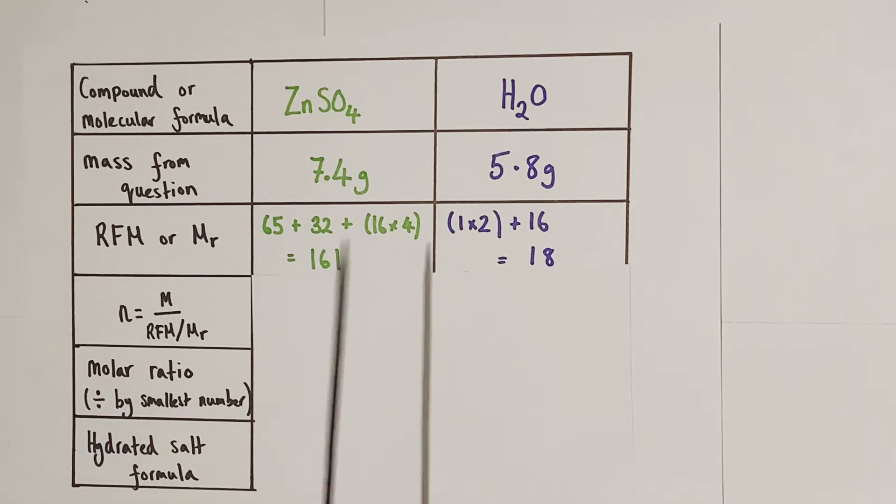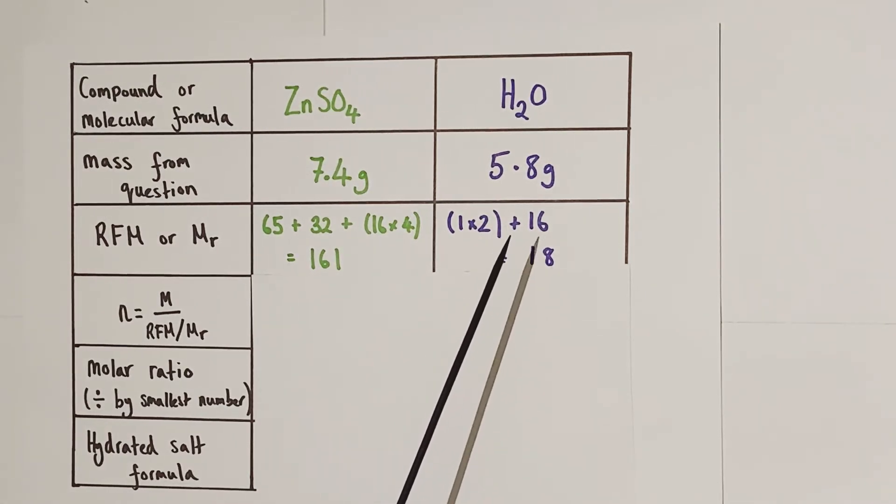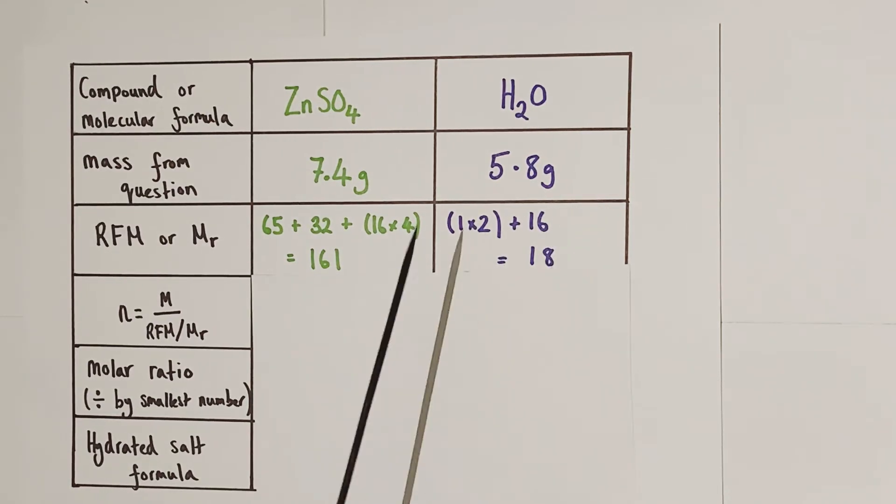Same thing for water. The relative mass of hydrogen is 1 multiplied by 2 because the formula of water is H2O. One oxygen. The relative mass of an oxygen atom is 16. So the total relative molecular mass of the entire molecule is 18.